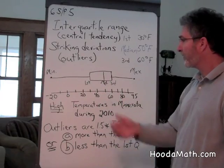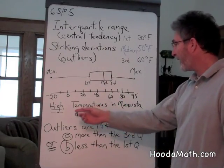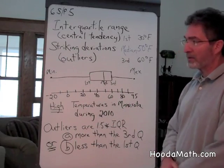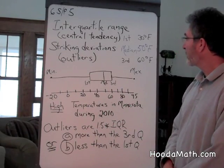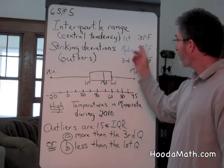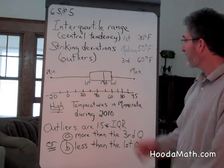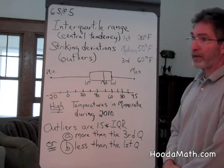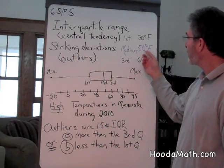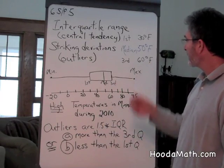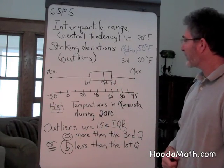Let's look at this set of data about the high temperatures in Minnesota during 2010. Our first quartile is at 30 degrees Fahrenheit. Our median temperature for that year was 50 degrees Fahrenheit. And the third quartile is 60 degrees Fahrenheit.